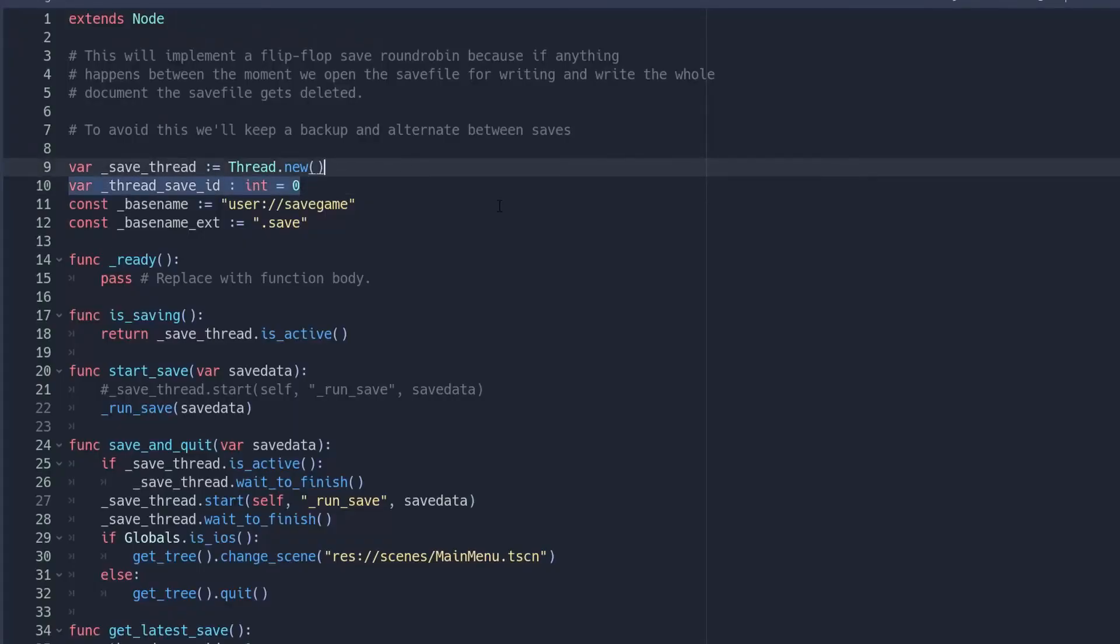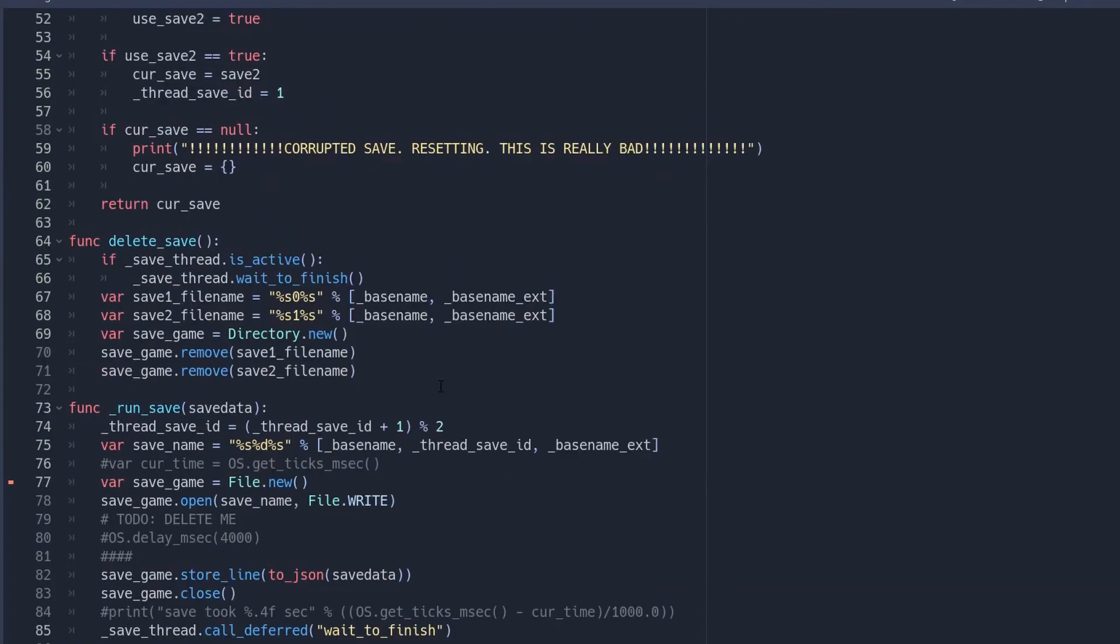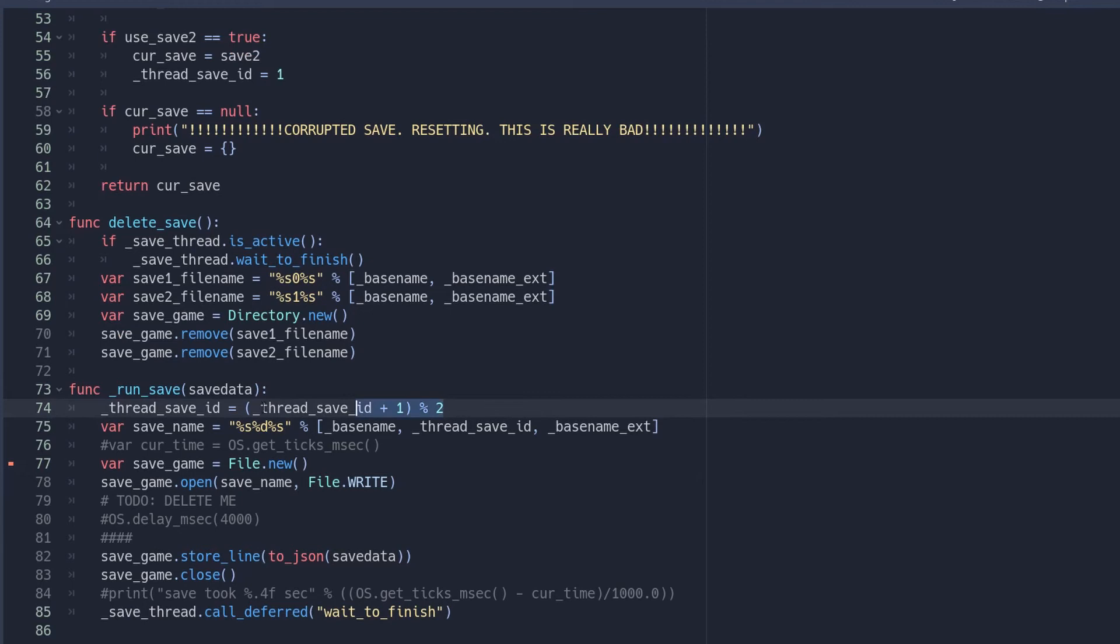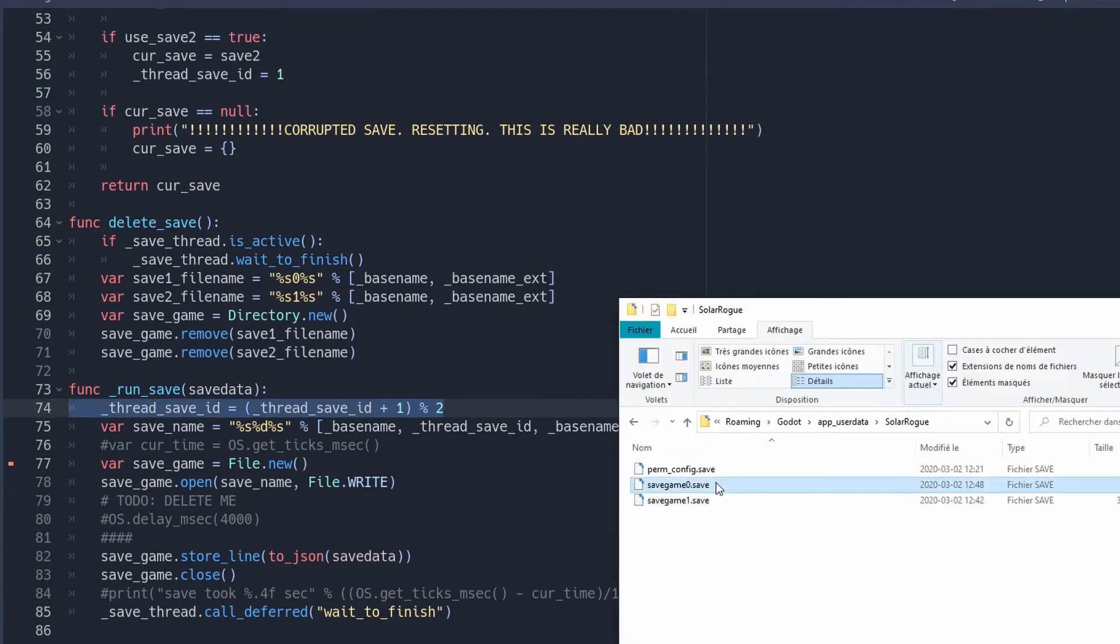And what that does is that even if save game 1 gets corrupted then I can always fall back to save game 2. And since I save every turn then it means that at worst I'm gonna be behind by one or two turns if I reload my game which is not so bad I think.